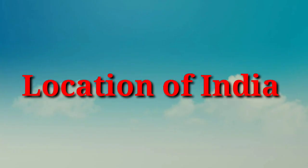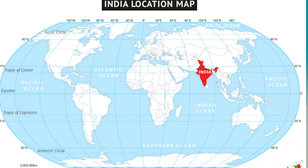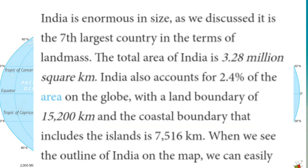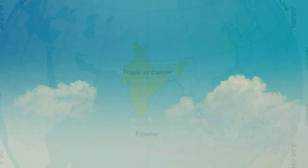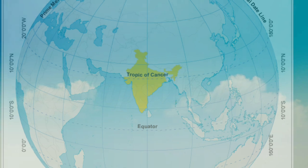We'll begin with the first aspect of geography: the location of India. India is the seventh largest country and the second most populous country of the world, accounting for about 2.4 percent of the total world area and 15 percent of the total world population. It has an area of 3.28 million square kilometers and lies in the northern hemisphere.